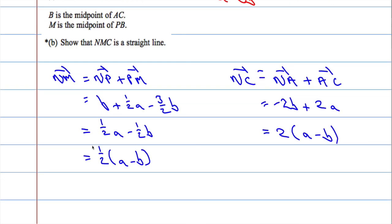So we can see that the vector NM is a half a minus b, and the vector NC is 2 times a minus b. So that means that if I take NC, NC is going to equal 4 times the vector NM. So just to clarify, this one here, if I times it by 4, I'm going to get this one.